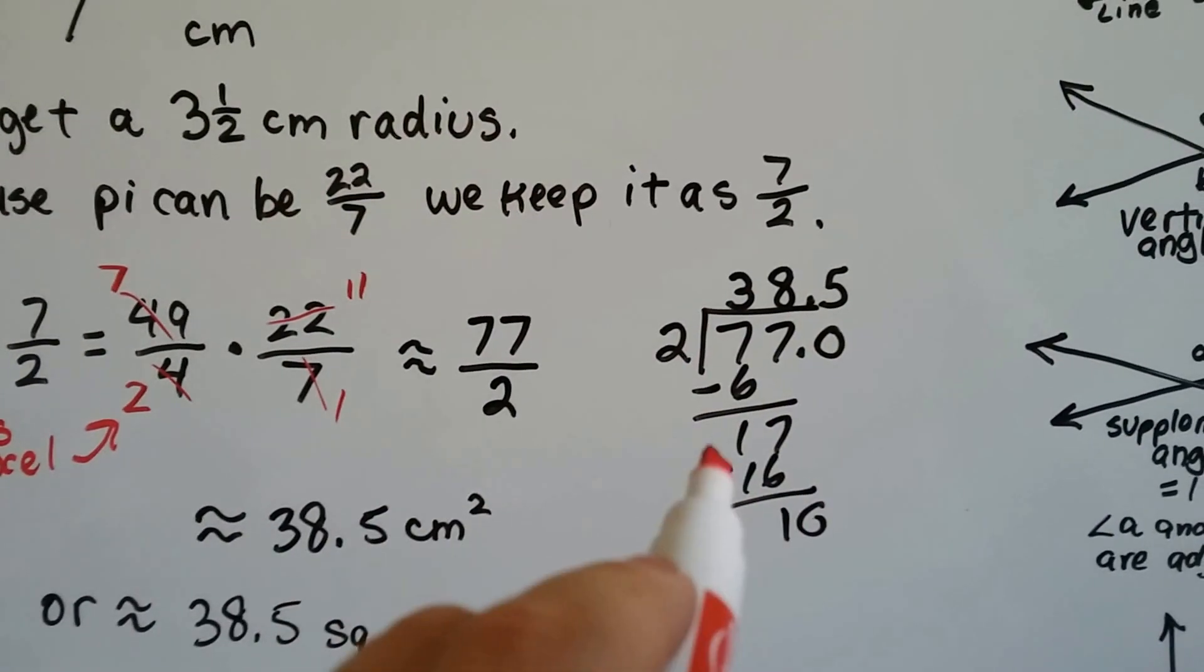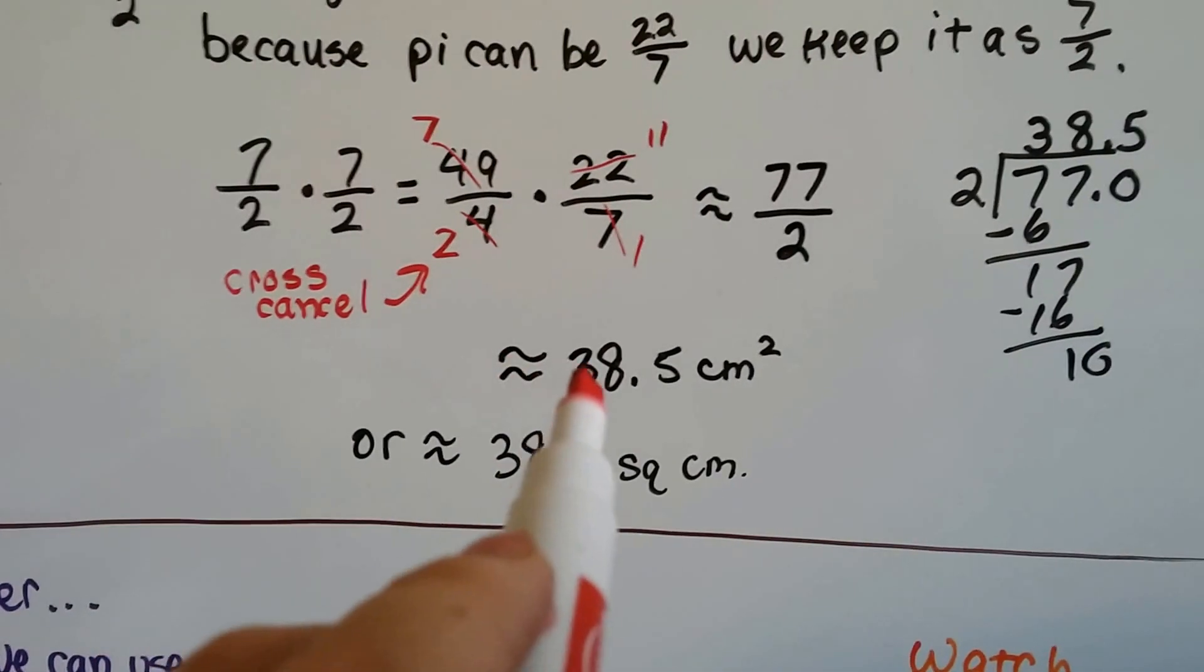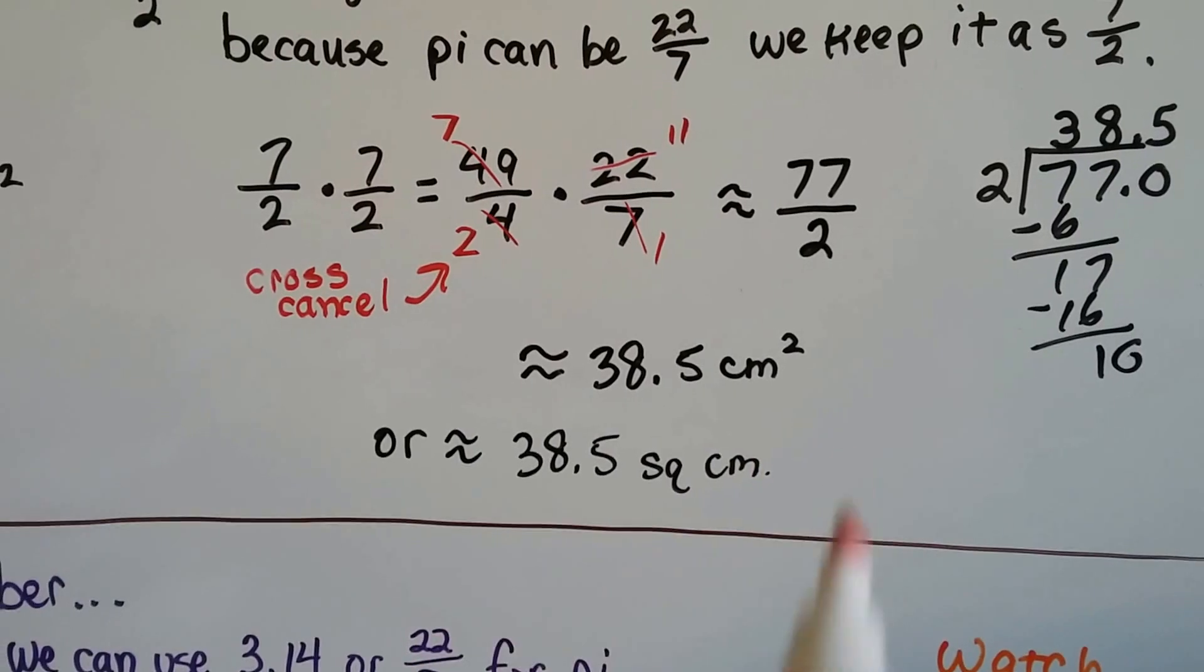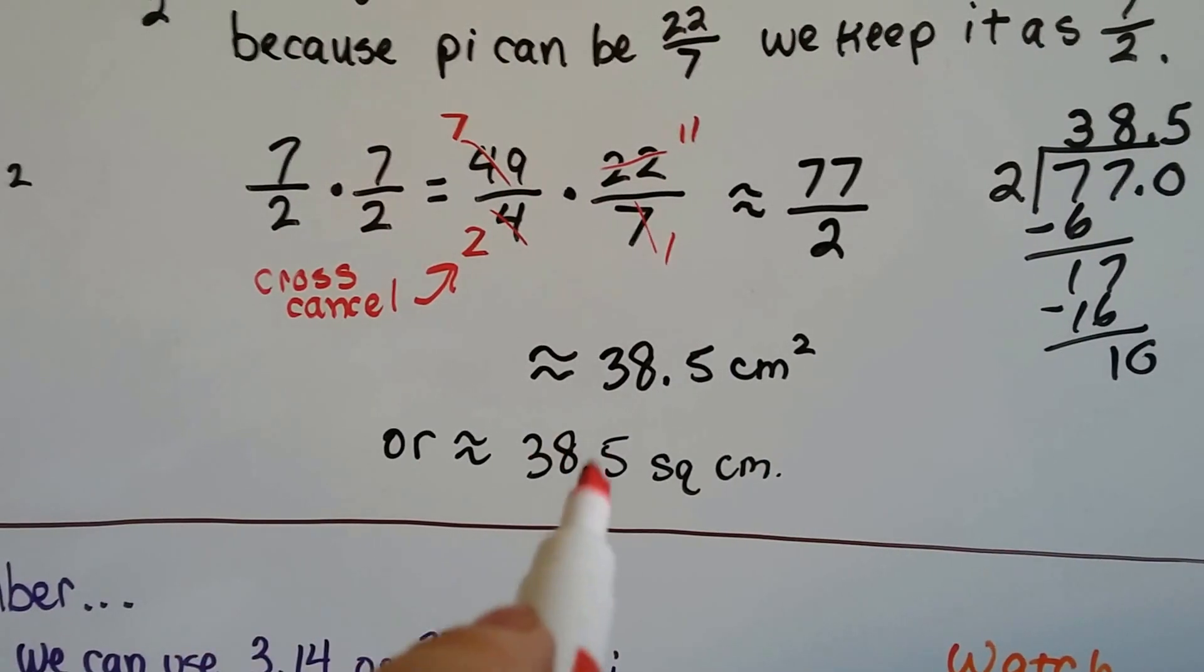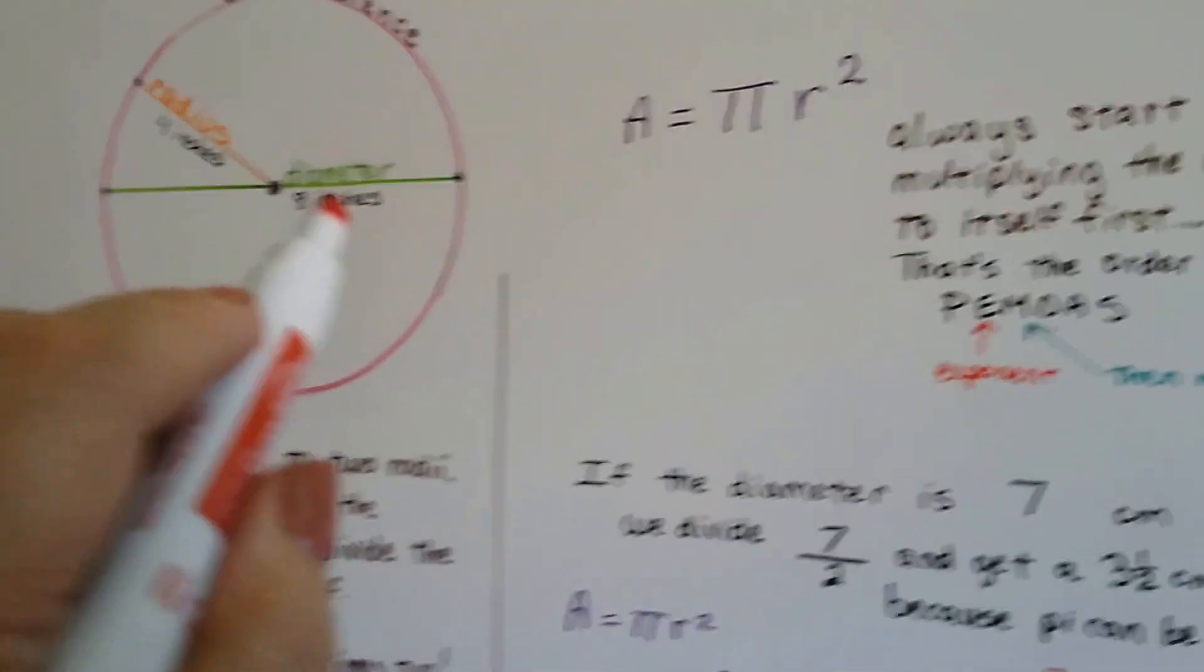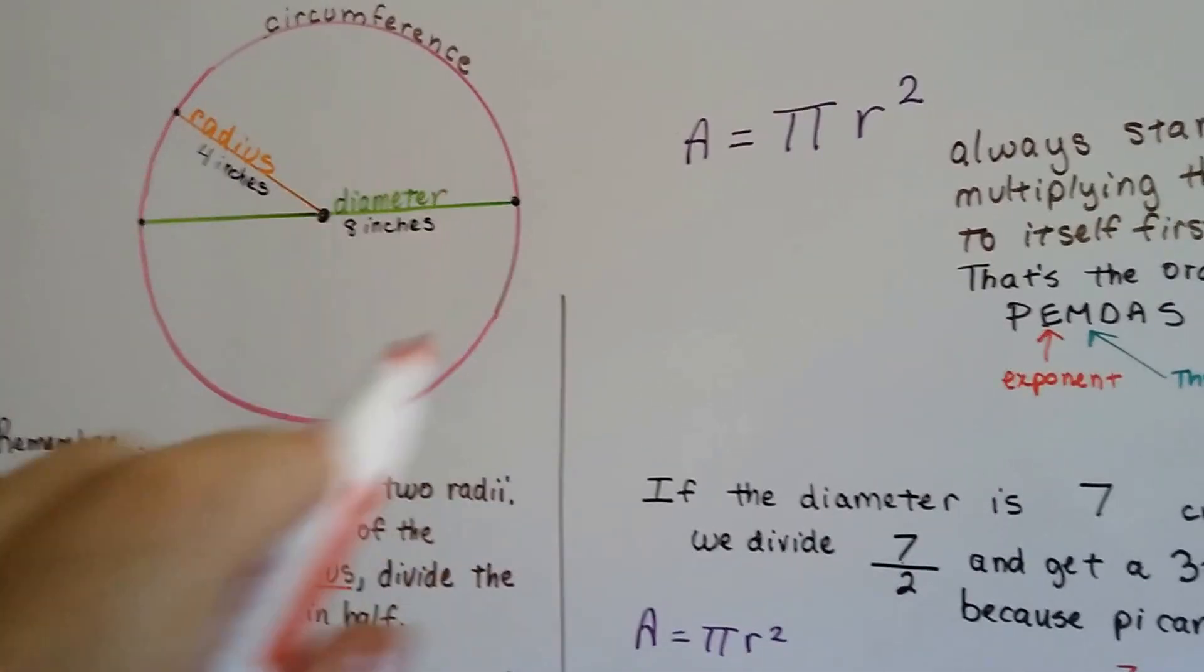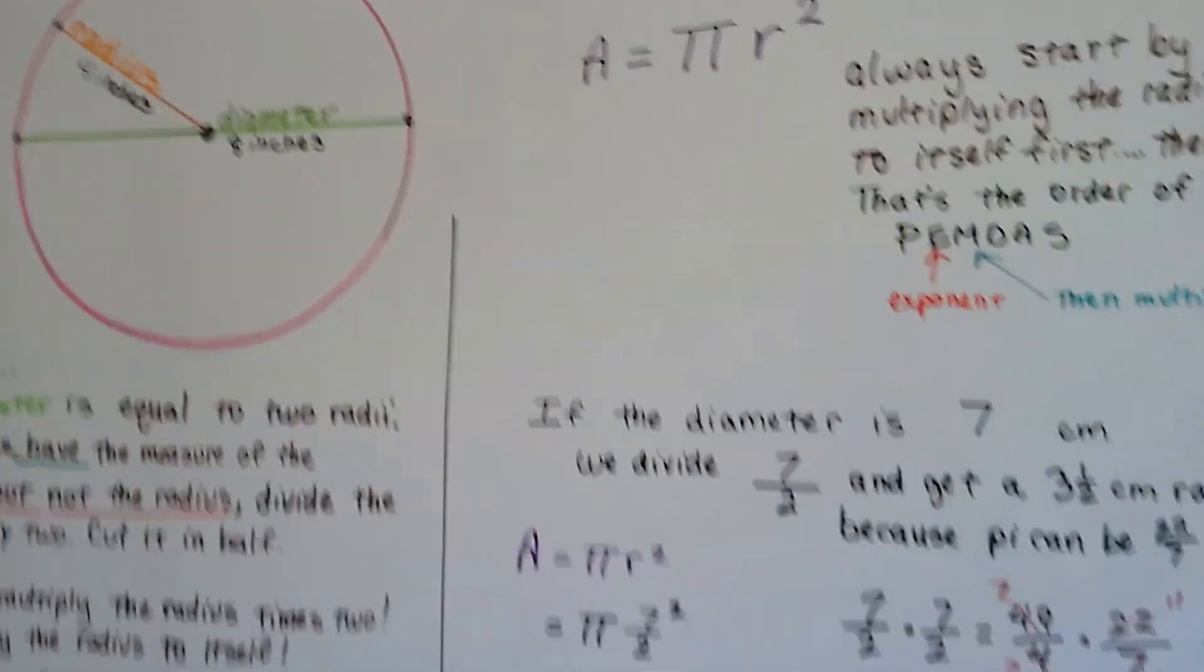Now how many times can 2 go into 77? We do our long division on the side, and we get 38.5. So we know our answer is approximately 38.5 cm squared, or approximately 38.5 square centimeters. That means if we had little square centimeters, it would take about 38 and a half of them to fill that circle.